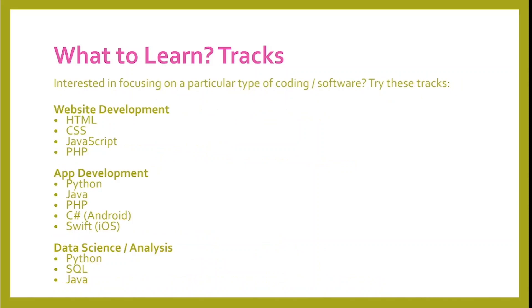Another way to think about what you might want to learn are tracks. If you're interested in website development, you would want to try learning HTML, CSS, JavaScript, and PHP. Or if you're interested in app development, you might focus on Python, Java, PHP, C Sharp for Android, and Swift for iOS. Or if you're thinking about data science and analysis, you might want to learn Python, SQL, and Java.